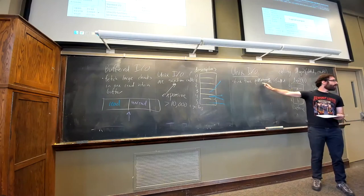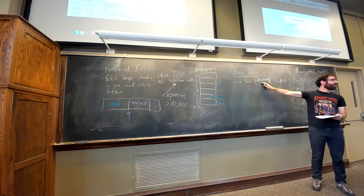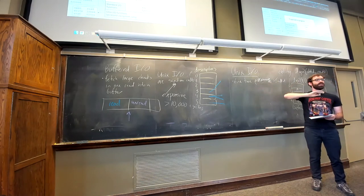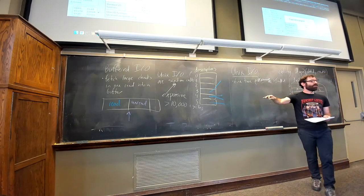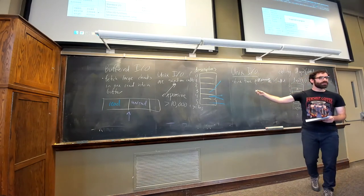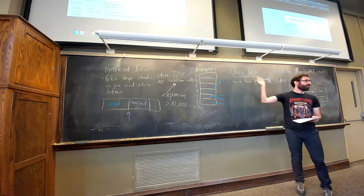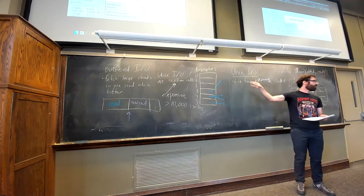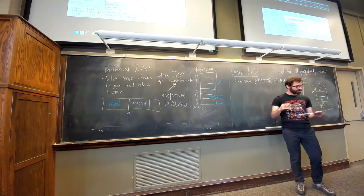Unix IO is best if we need really fine-grained control of what we're doing, or the lowest possible overhead — that's what the raw system calls can give us. Otherwise, the higher-level options are going to be a better choice.